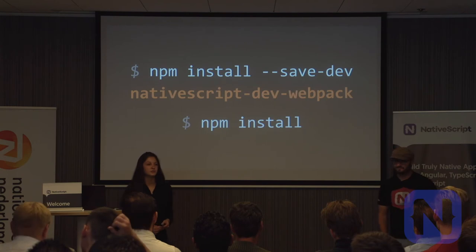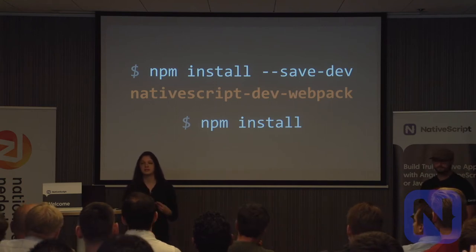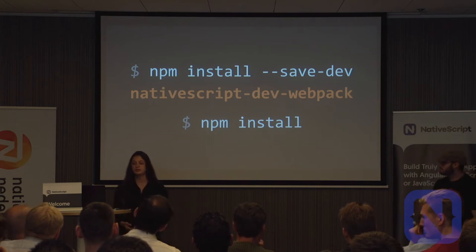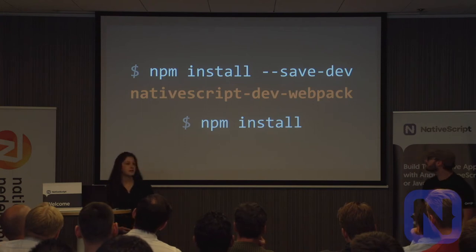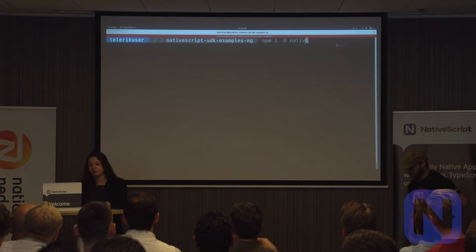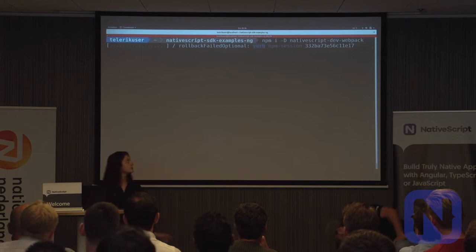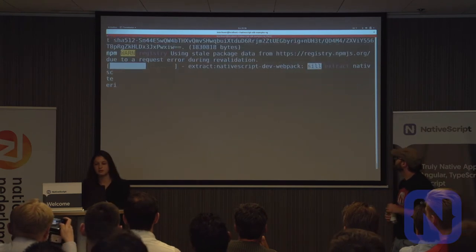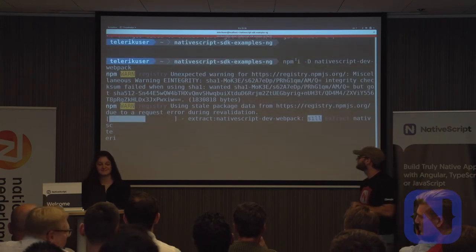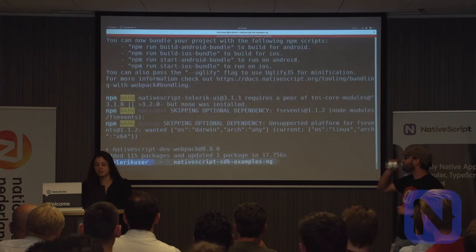To enable Webpack, the easiest way is to use the NativeScript Dev Webpack plugin as a development dependency. Because it adds several other npm plugins to your project, you need to run npm install once again. After installation, we use several npm scripts to bundle our application — 'build-android-bundle' and 'build-ios-bundle'. To install: run 'npmi -D nativescript-dev-webpack' — 'npmi' is shorthand for 'npm install' and '-d' is the same as '--save-dev'. We then see some new Webpack configuration files added to our project.